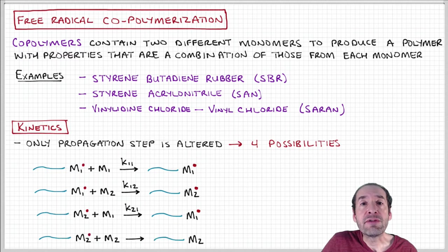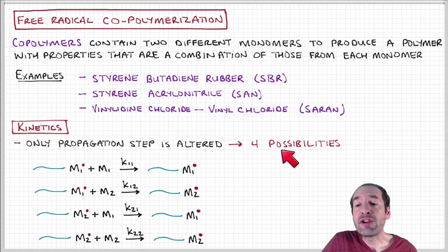In the context of copolymerization, we're going to focus on the propagation step, because that's really the one that's going to be altered during copolymerization. The reason is that now there are four possibilities for what can happen during the propagation step.